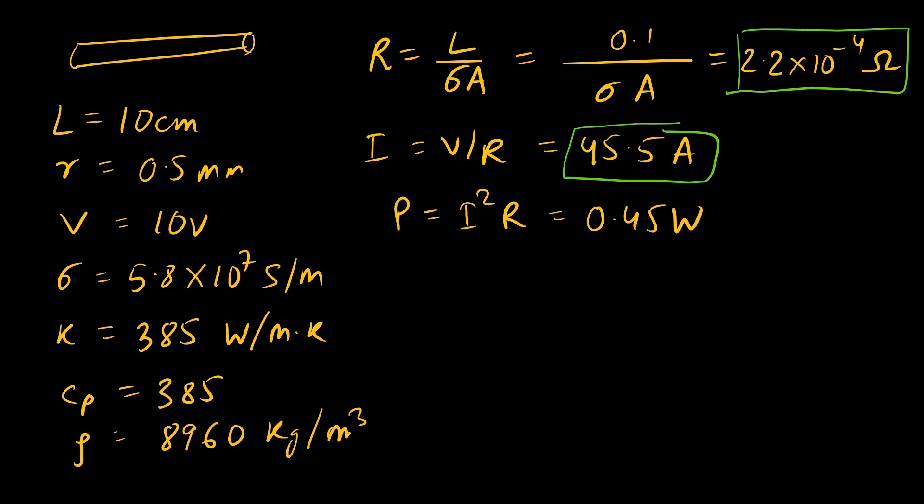To compute the heat generation rate per unit volume, we calculate Q = P/V, where P is 0.45 W and volume is πr²L. If we plug in the volume of the cylinder, we will get Q around 1.8×10⁶ W/m³. This heat source term is used in the heat conduction equation to determine the temperature distribution.